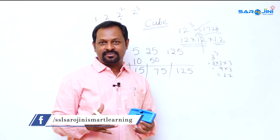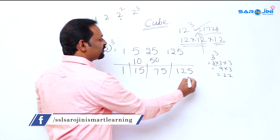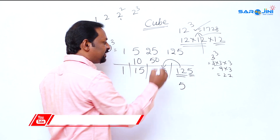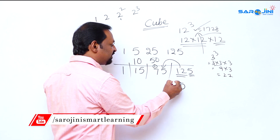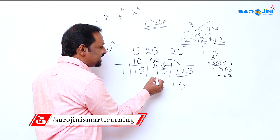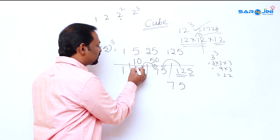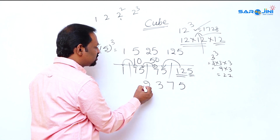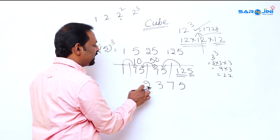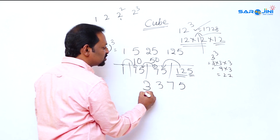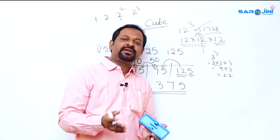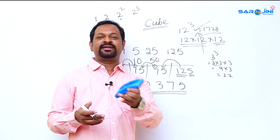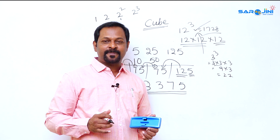Whenever you get double or triple digits, apply the balancing rule. From 125, bring down 5, carry 12; add 12 to 5 to get 17, bring down 7, carry 1; add 1 to 8 to get 9; add the remaining to get 3. Final answer: 3375. Verification: 15 × 15 = 225, and 225 × 15 = 3375. Correct!